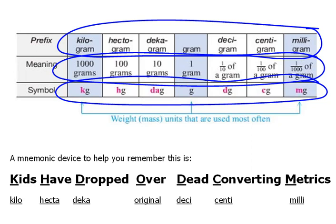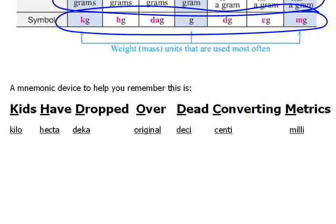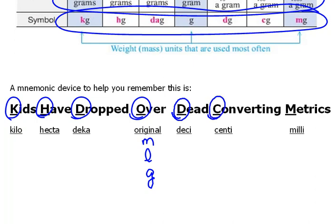If you'll remember that mnemonic device we talked about, we said Kids Have Dropped Over Dead Converting Metrics will help you to remember: kilo, hecta, deca, original units (whether they be meter, liter, or gram), deci, centi, milli.